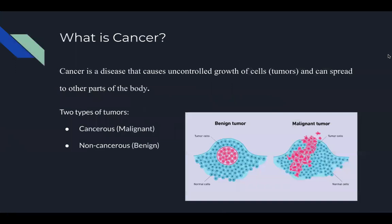What is cancer? Cancer is a disease that involves the uncontrolled growth of cells which develop into tumors and are able to spread to other parts of the body. There are two types of tumors: cancerous, also known as malignant, and non-cancerous, also known as benign. Cancerous or malignant tumors can metastasize and spread to other parts of the body to infect tissues, which cause the growth of new tumors. Non-cancerous or benign tumors are not able to spread to other parts of the body, and they likely will not grow back after being removed.